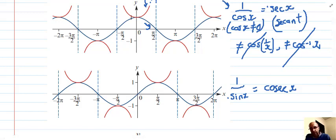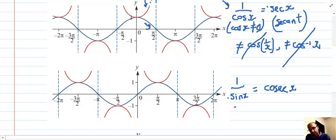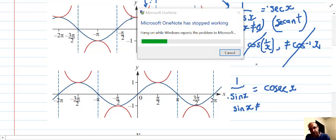Now for cosec equals 1 over sin, it's true when sin x does not equal 0, as you can see.